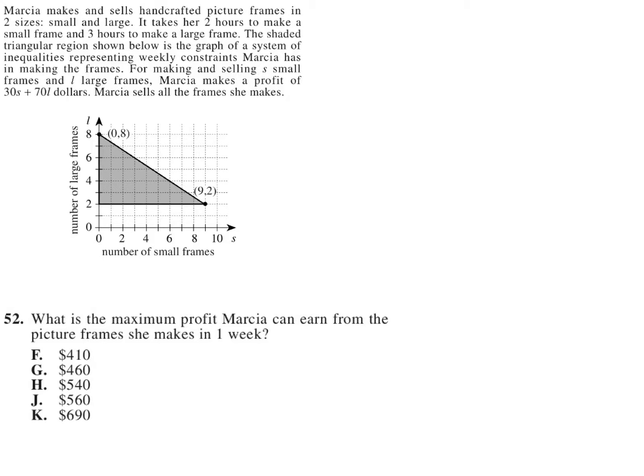the most money she can possibly make. Okay, so what do we have? What do I know? I know that her profit, P, is equal to 30 times S plus 70 times L. Well, how do I know that? It's provided in the question here.